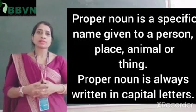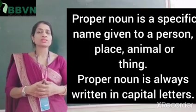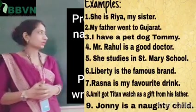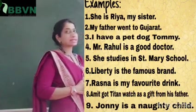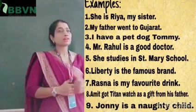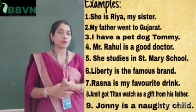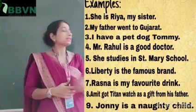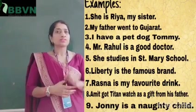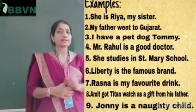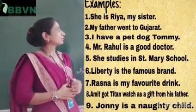Now we are going to solve some examples to understand this topic. The first sentence is: 'She is Rhea, my sister.' Here you can see which word is written in capital — Rhea. In Rhea, the first alphabet is capital, which means it is a proper noun. So Rhea is a proper noun. The next one is: 'My father went to Gujarat.' Gujarat is the name of a place — a proper name attached to a place — so Gujarat is a proper noun.